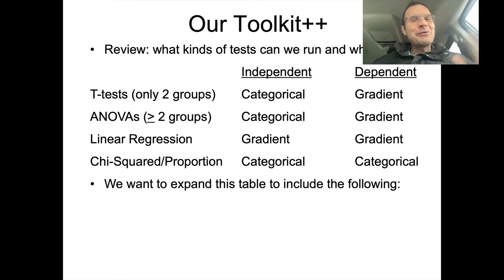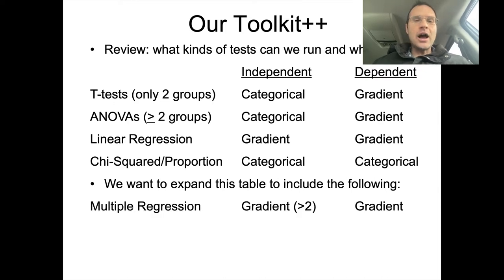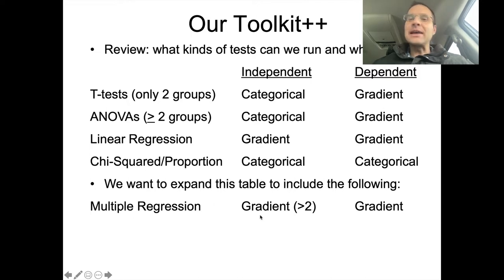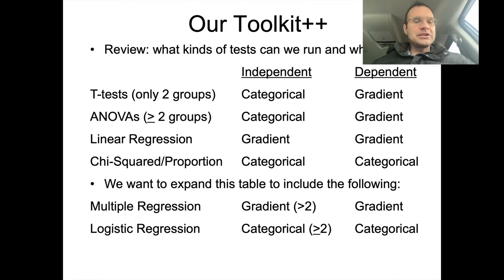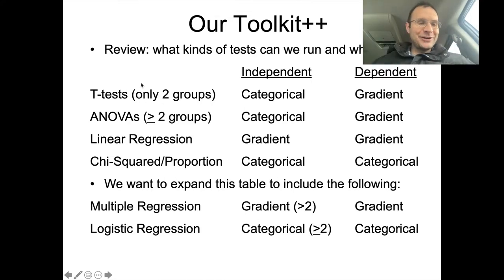What we want to do is expand this table to include multiple regression, which is the same kind of data setup as linear regression with gradient independent and gradient dependent variables, but we can have more than two independent variables. We can look at how they correlate with or predict the values of the dependent variable. Next time we'll talk about logistic regression, where independent variables are categorical but we can have two or more of those as well.